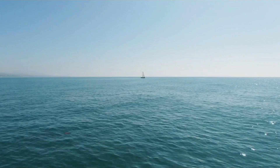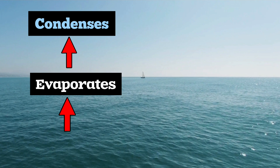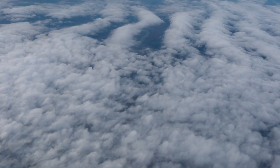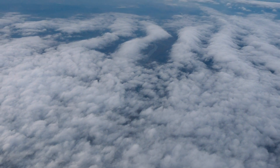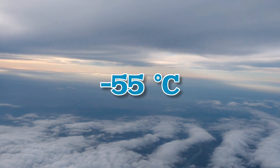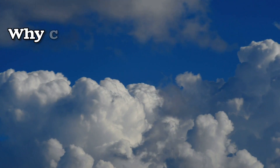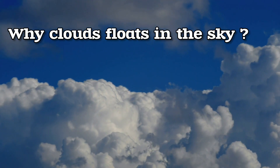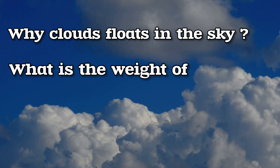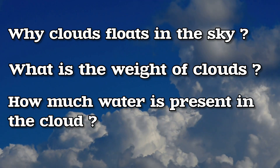Clouds are formed when water evaporates and condenses in the sky, transforming into ice crystals due to extremely cold temperatures in the atmosphere, around minus 55 degrees Celsius. However, when witnessing heavy rainfall, one may question why clouds which are loaded with water still float in the sky. What is the weight of a cloud and how much water is present in it? So let's discuss.